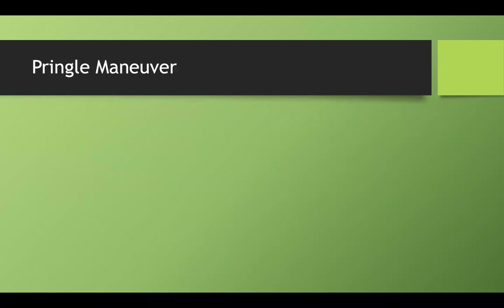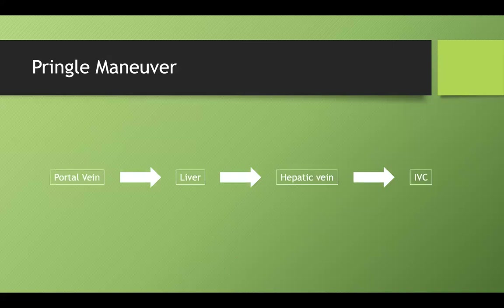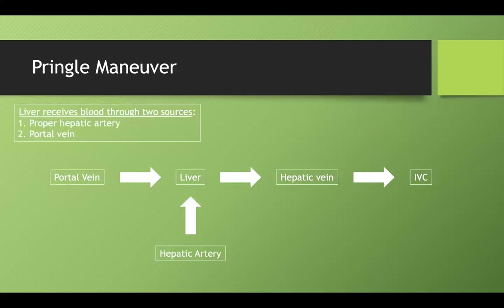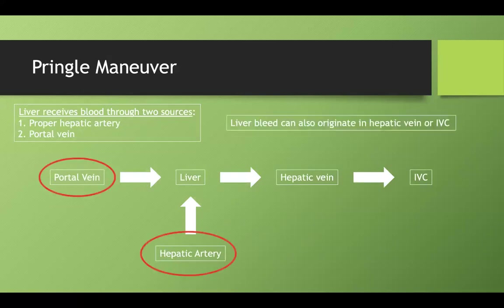All GI tract organs drain blood into the portal system through the portal veins, which drain into the liver, then the hepatic vein, and into the IVC — our main vein returning blood to the heart. The liver also receives a second blood supply from the hepatic artery, giving it two blood sources total. Keep in mind that bleeding in this region could also be from the hepatic vein or IVC, as they're all anatomically close.